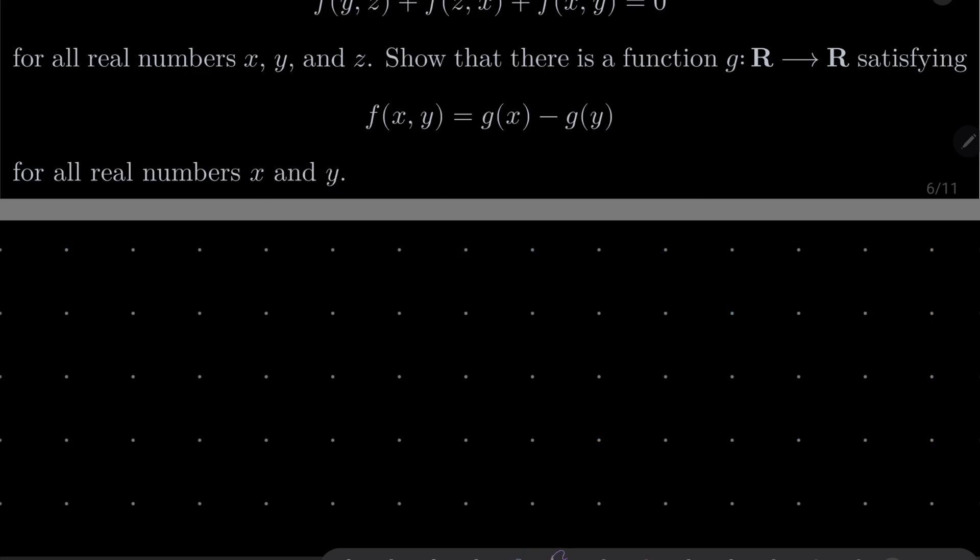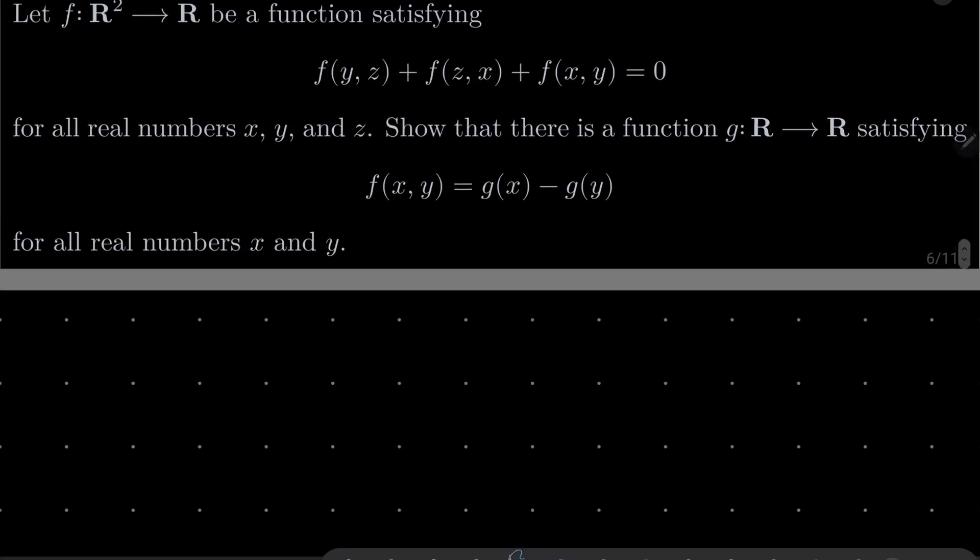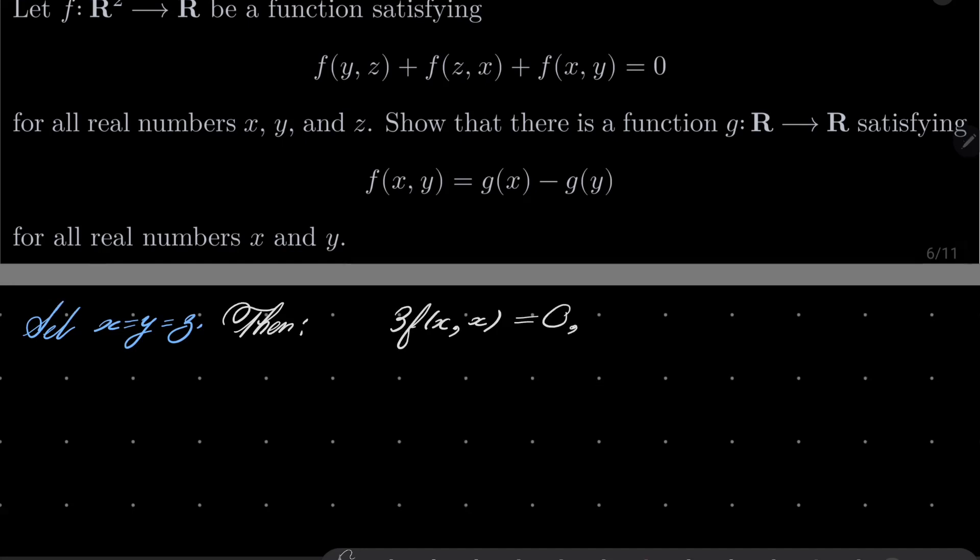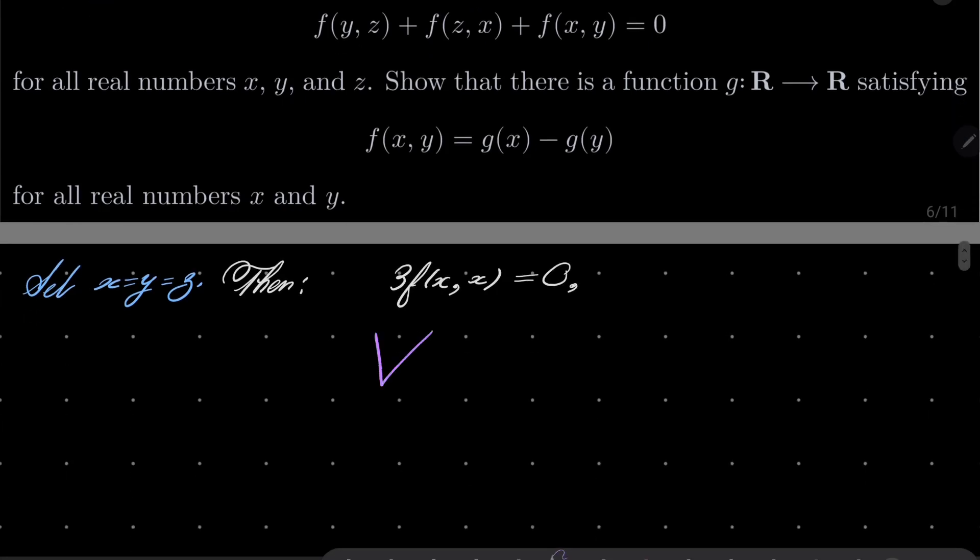Right. So as I suggested, let's first set x, y and z to be equal. Notice that then we have 3 times f of xx equals 0, which of course means that for every real number x, f of xx equals 0. So let's remember that.